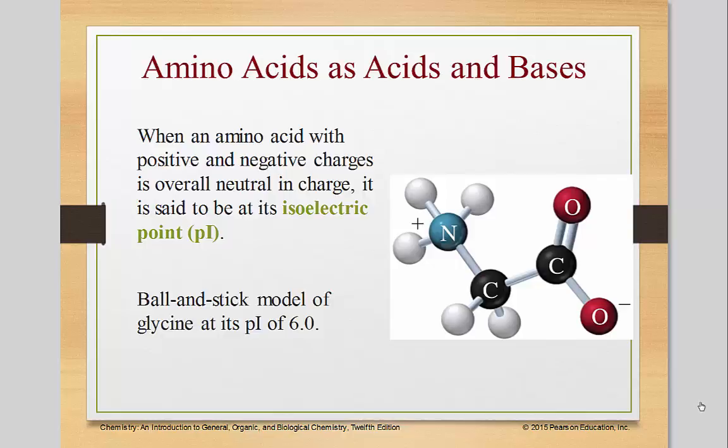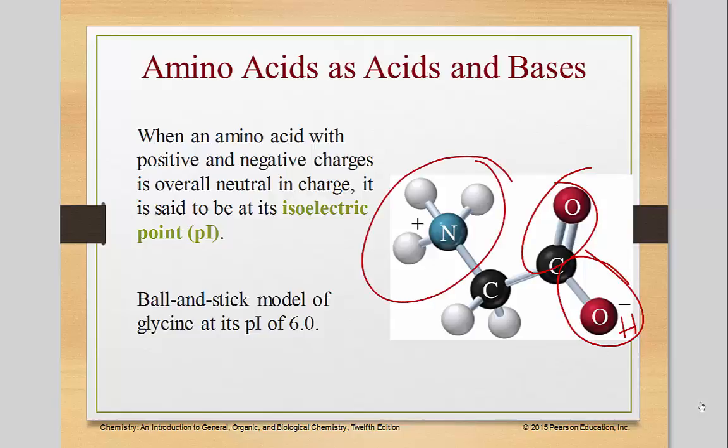In this tutorial, we will be discussing amino acids as acids and bases. So in an amino acid, there would be a carbonyl group and a hydroxide group. And then you'd have a nitrogen over here.